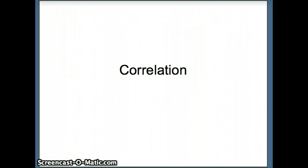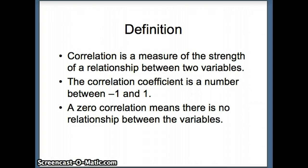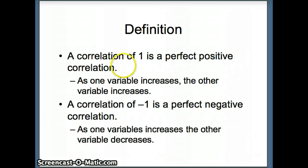This presentation examines the notion of correlation. Correlation is a measure of the strength of a relationship between two variables. The correlation coefficient is a number between negative one and positive one. A correlation of zero means there is no relationship between the variables — there is no way to make a reasonable prediction of one variable from the other.